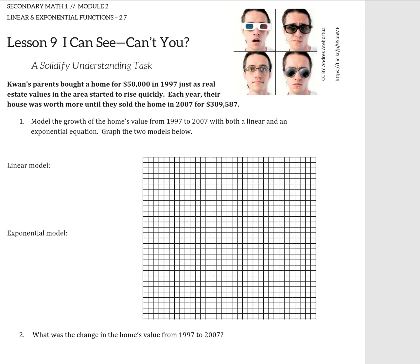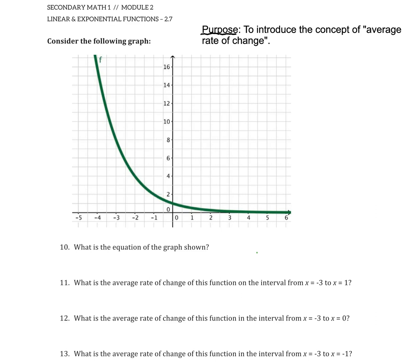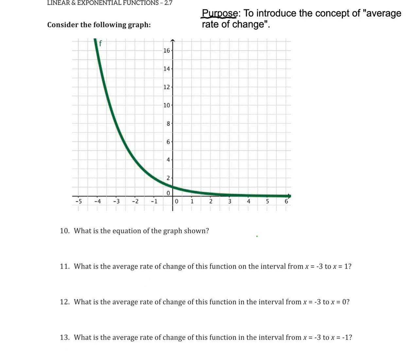I'm going to skip on down to problem 10 because the purpose of this task is to introduce the concept of average rate of change. That is most easily and most efficiently done here through problems 10 through 14 based off of this graph. In problems 1 through 9 you would have been looking at a real-world scenario of a home and its value increasing over time, and you would have found in problem 9 a formula for average rate of change.